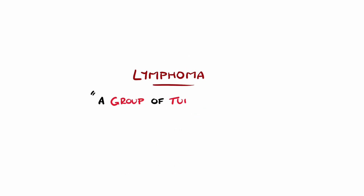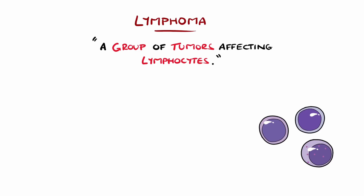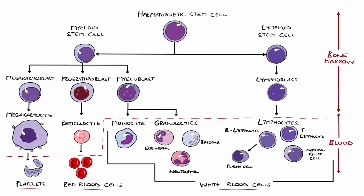Lymphoma is a term used for a group of tumours that affect lymphocytes, a subset of white blood cells. They are divided primarily into Hodgkin's lymphoma and non-Hodgkin's lymphoma. Lymphocytes develop from common lymphoid progenitor cells and ultimately become one of three main types: B lymphocytes, T lymphocytes, or natural killer cells. Lymphoma can arise from each of these at any stage of their development.